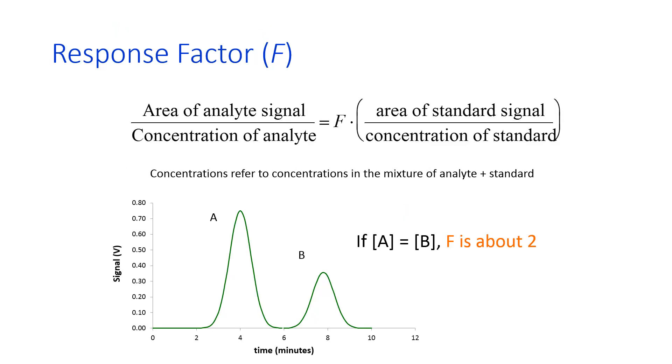And so this is sort of what you can use to visualize that. So if you have two substances, A and B, in your unknown, if one of them, let's say A is your analyte and B is your internal standard, the response factor for this case would be about 2. If your concentrations are equal, A gives you about twice the peak area as B, and so you find your response factor.